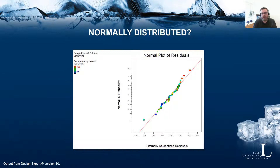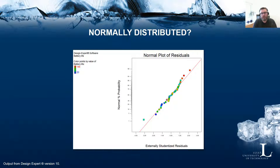I should also mention externally studentized residuals, which is the default option in this software. I won't go into the details of how these are calculated, but basically the residuals are calculated by first excluding a specific observation, refitting the model without that observation, and then calculating the residuals without that specific observation as part of the model.